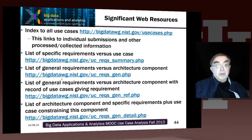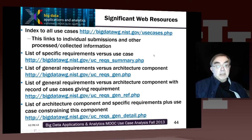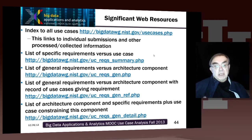Here are some important web resources. This is the use cases website I already mentioned. There's the specific requirements for each use case, the general requirements versus architecture component, and the general component versus architecture component with the record of the use cases giving that requirement. These various websites give you the rich detail which you can use to understand how these different use cases fit together and drive the reference architecture.